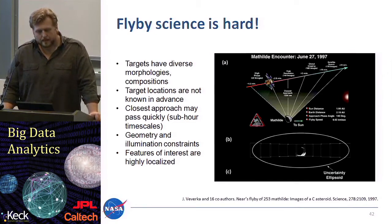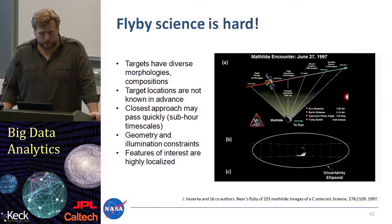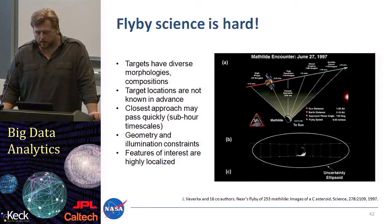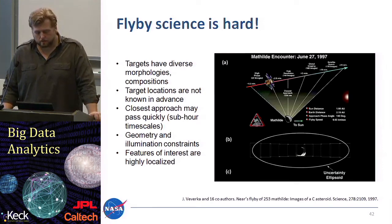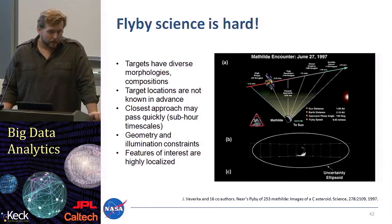These targets have a very diverse morphology and a very diverse composition, which we're actually interested in. Their target location is not known beforehand. A good example is the current Rosetta mission, where it actually turned out that it's a more or less two-body object.